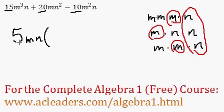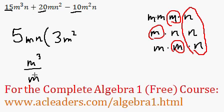15m cubed n divided by 5mn will be 3m squared. Why is that? Well, the n's cancel out, so we have no more n's. m cubed divided by m, m is just to the power of 1, so 3 minus 1, 2. And 15 divided by 5, just 3.